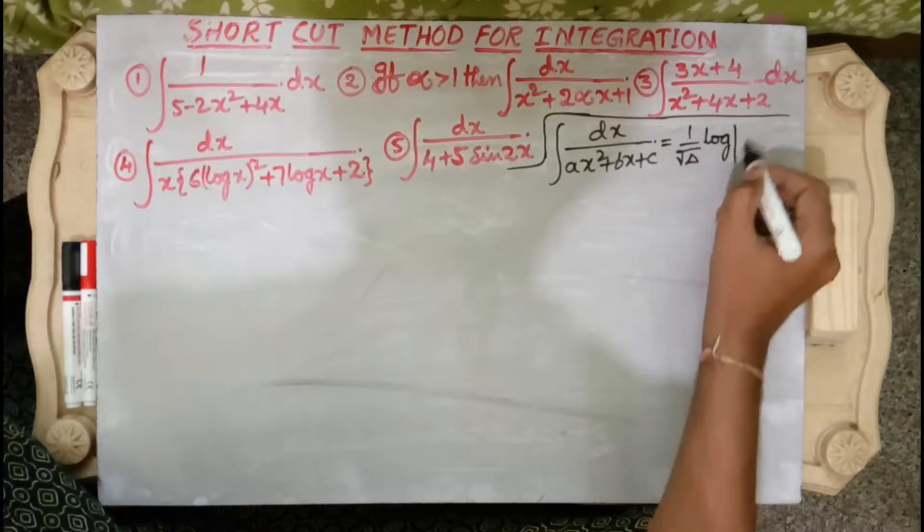Applying the formula: 1 by root delta equals 1 by root 1 equals 1. Q' (derivative of 6t² plus 7t plus 2) equals 12t plus 7. Root delta equals 1. So the solution is log mod (12t plus 7 minus 1) over (12t plus 7 plus 1), which simplifies to log mod (12t plus 6) over (12t plus 8). Substituting back t equals log x: log mod (12 log x plus 6) over (12 log x plus 8).